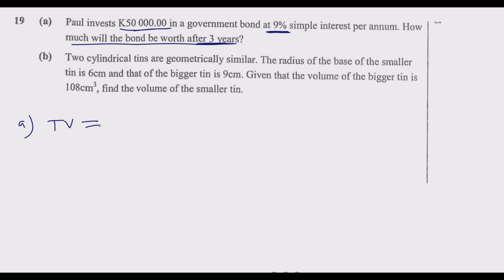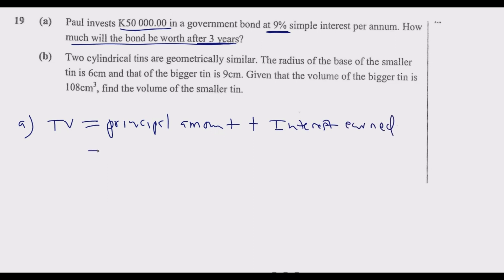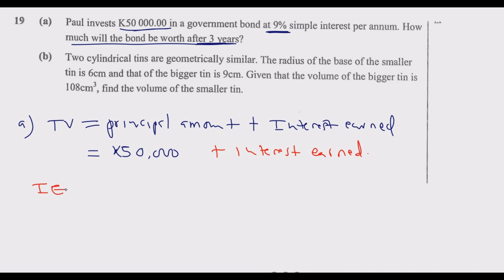The total value (TV) is equal to the principal — which is the initial amount invested — plus the interest earned. The initial amount we know is 50,000 quatsha, so what we need to find is the interest earned during this period. Once we find that interest, we are good to go.